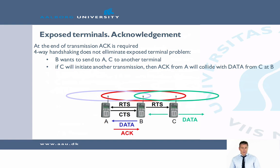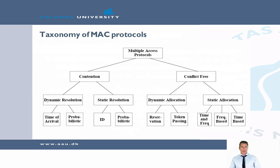The problem is a little different with exposed terminals. At the end of a transmission an acknowledgement is required, but this four-way handshaking does not really eliminate the exposed terminal problem. If B wants to send to A and C wants to send to another terminal, if C initiates another transmission, the acknowledgement from A will collide with the data from C to B, so we still have the exposed terminal problem. Finally, the last slide shows a taxonomy of MACA protocols, which covers the division between dynamic and static allocation that we have been discussing in this video.